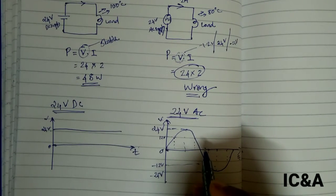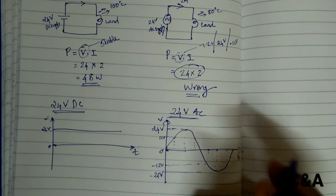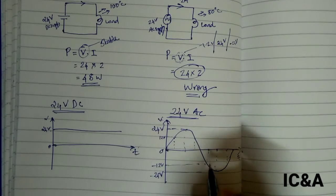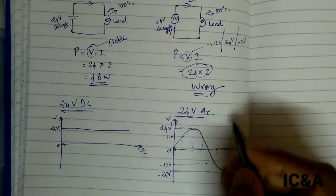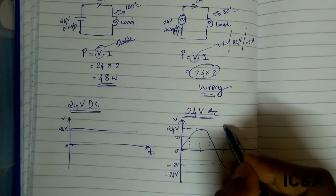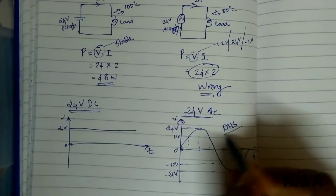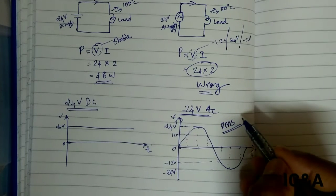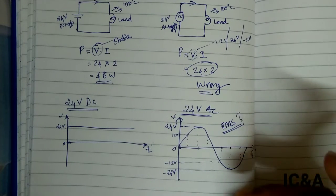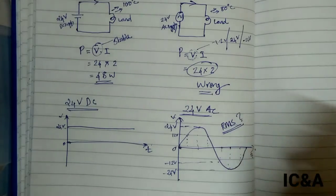This equivalent constant voltage is what we call the RMS value — it represents the effective value of the alternating current that produces the same power as a DC supply.